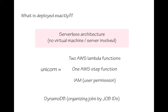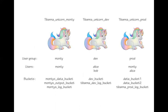We can deploy multiple unicorns with different user groups — for example, Monty, Dev, and Prod. The admin can add users to different user groups using an add user command. Different user groups have different permissions and different bucket access, allowing you to organize different projects with different user permissions, or by stages such as Dev versus Prod.